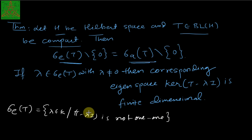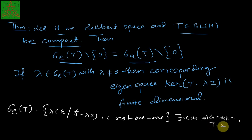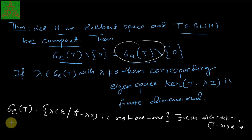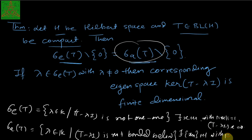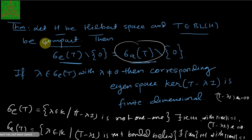That means the kernel of T minus λI is nonzero — there exists x in H with ‖x‖ = 1 such that (T − λI)x = 0. The approximate eigenspectrum of T is defined as the set of all λ in K such that T minus λI is not bounded below, or equivalently, there exists a sequence xn in H with ‖xn‖ = 1 such that ‖(T − λI)xn‖ → 0.